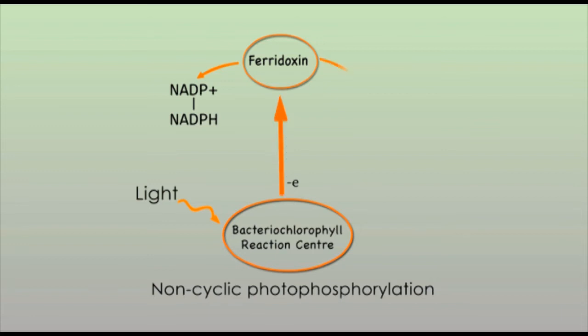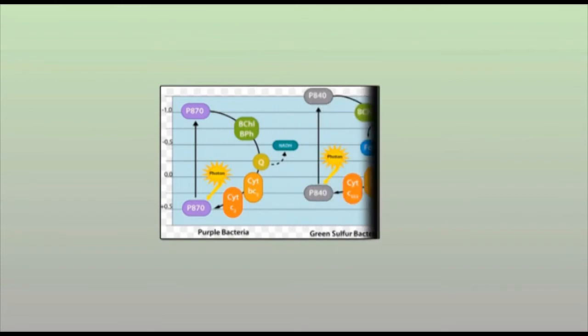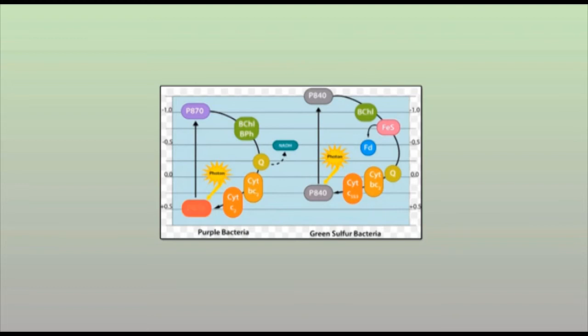In non-cyclic photophosphorylation, the reaction center must be re-reduced before the process can happen again; therefore an external electron source is required. In these systems, reduced forms of sulfur such as hydrogen sulfide can be used as an electron donor instead of water, as in photosystem II in plants. The photosystems of purple bacteria and green bacteria have photosynthetic reaction centers P870 and P840 respectively. Purple and green bacteria possess only photosystem I; their reaction centers do not use water as an electron donor during non-cyclic photophosphorylation and thus cannot produce oxygen from water photosynthetically, so they are anoxygenic.